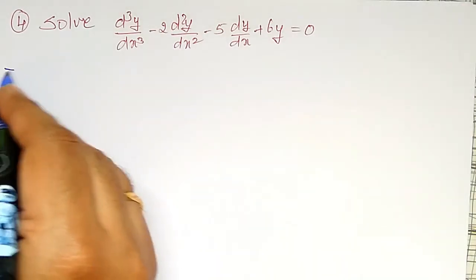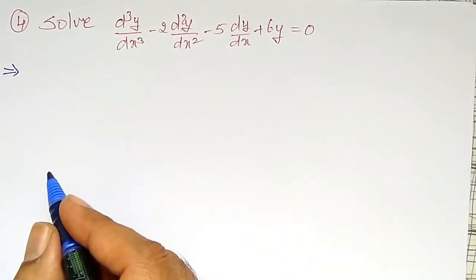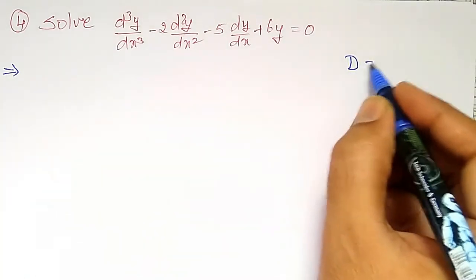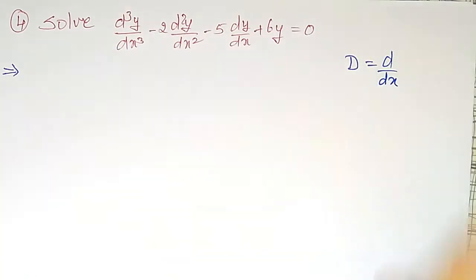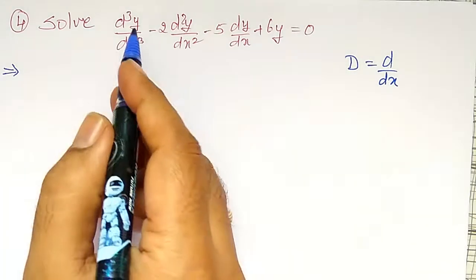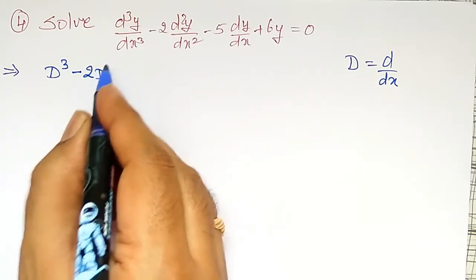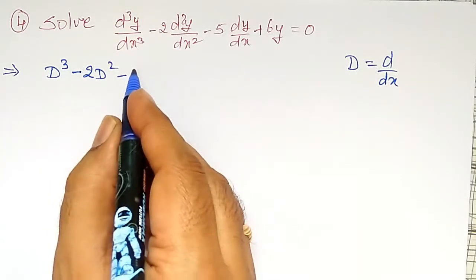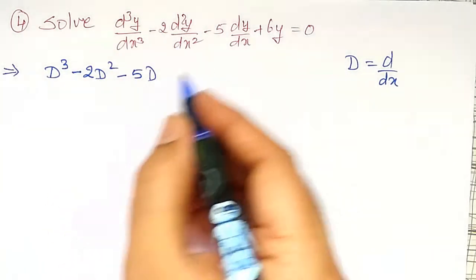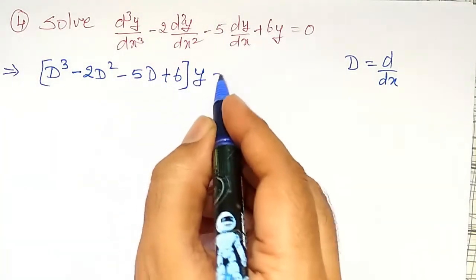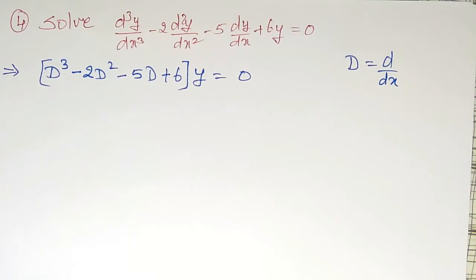Now, I will write the given differential equation in the symbolic form using differential operator D equal to dy/dx. That is, I can write this one as (D³ - 2D² - 5D + 6)y = 0. That is, y is taken common.